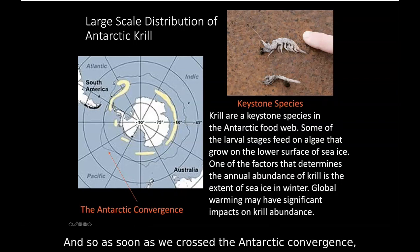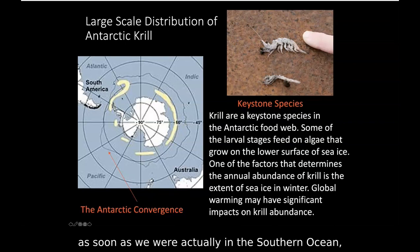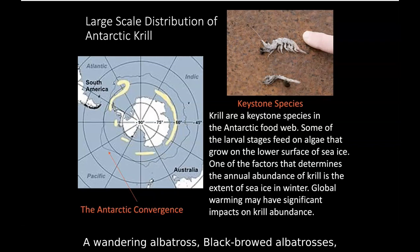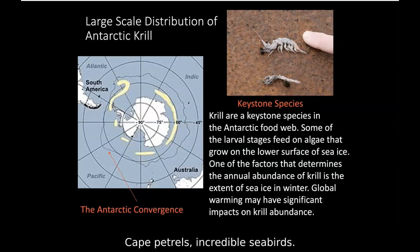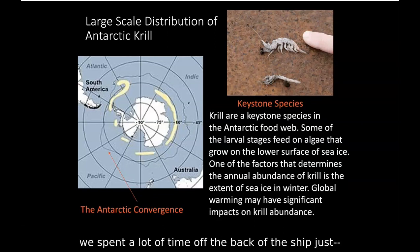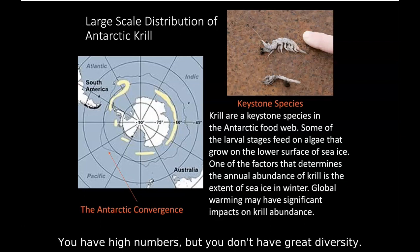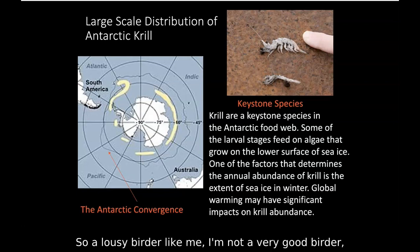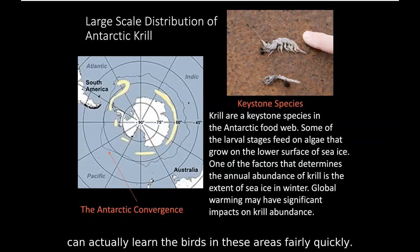As soon as we crossed the Antarctic Convergence and entered the Southern Ocean, we started seeing different albatross species — wandering albatrosses, black-browed albatrosses, cape petrels — incredible seabirds. The seabird density was remarkable and we spent a lot of time off the back of the ship. It's not hard to learn the birds here because you don't have huge diversity, you have high numbers. Even a lousy birder like me can learn them fairly quickly.